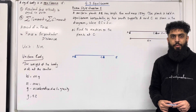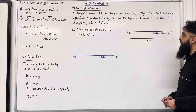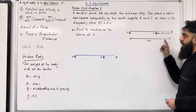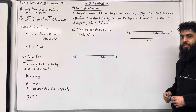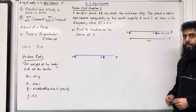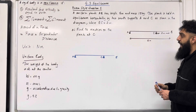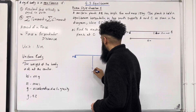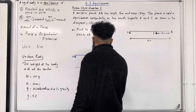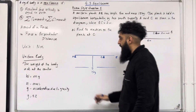Exam style question one: A uniform plank AB has length 5 metres and mass 15 kg. The plank is held in equilibrium horizontally by two smooth supports A and C, where BC equals 2 metres. Part A: find the reaction on the plank at C. I'm going to take the plank and label all the forces acting on it. This plank is uniform, which means the weight acts at the centre. The mass is 15 kg, so the weight is 15g acting at the centre, splitting the 5 metre length into two equal parts of 2.5 metres each.